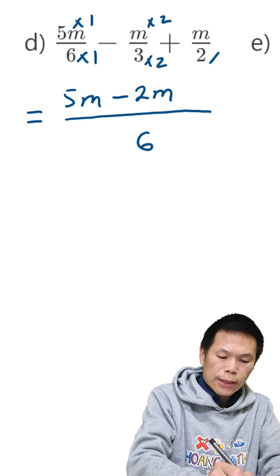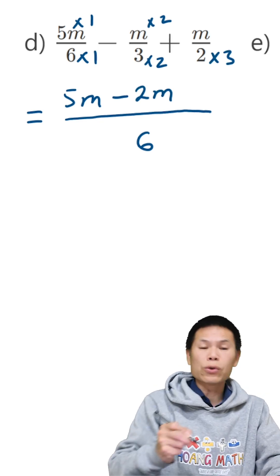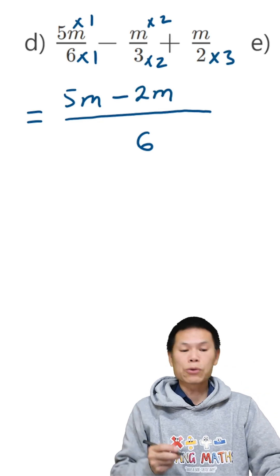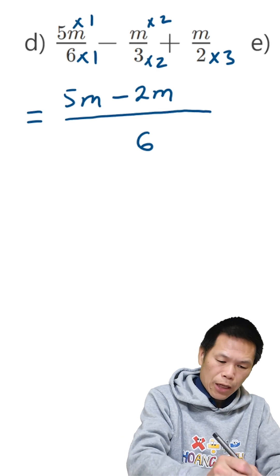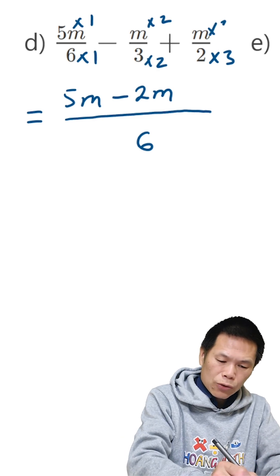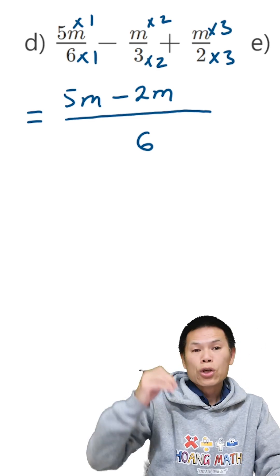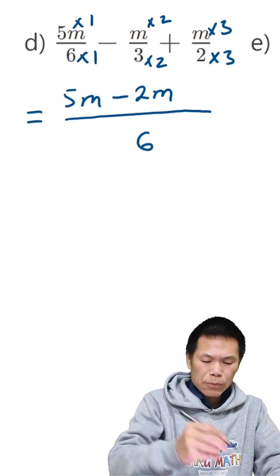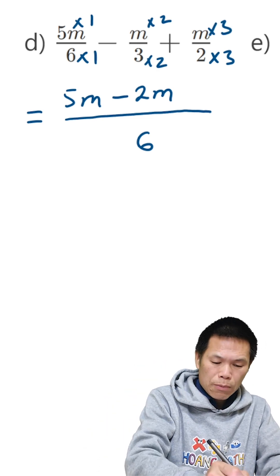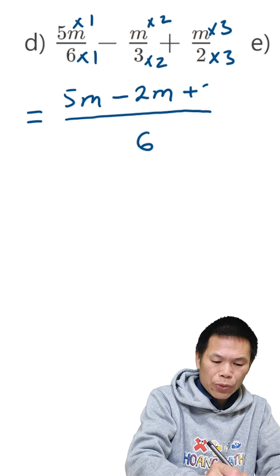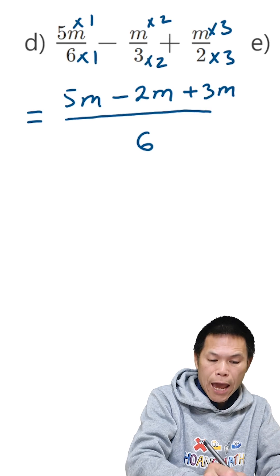And from 2 to 6, I times by 3, because 3 times 2 is 6. So I times this by 3 as well. So m times 3 gives me 3m. So we add 3m.